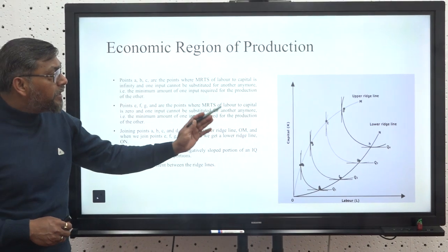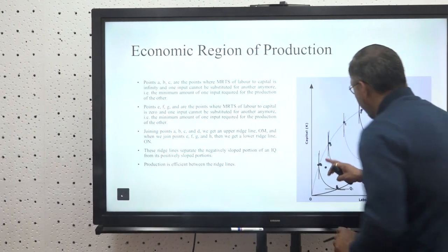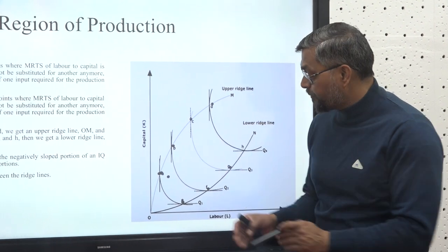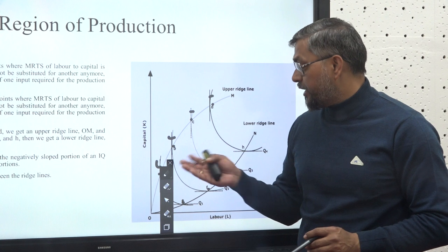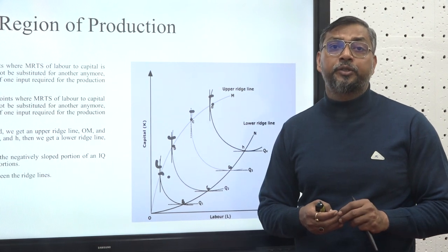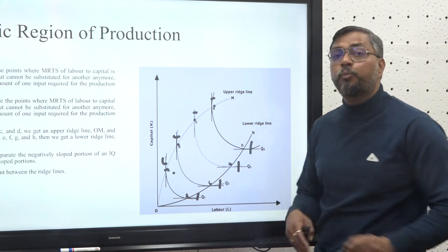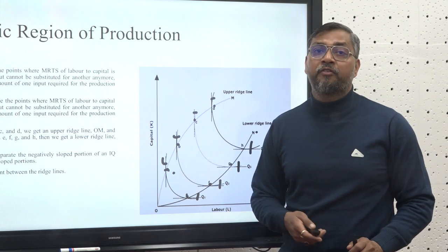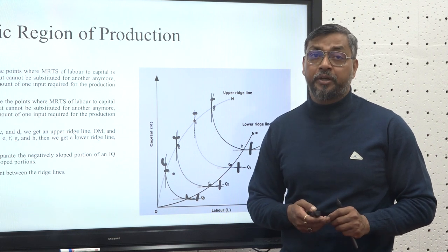At points A, B, C, and D, the marginal rate of technical substitution of labor to capital is infinity — beyond these points it is not feasible for a producer to produce any commodity. The points that lie between the upper ridge line and lower ridge line help us in identifying the economic region of production. This is one of the special cases of isoquants that helps us understand the economic region of production.